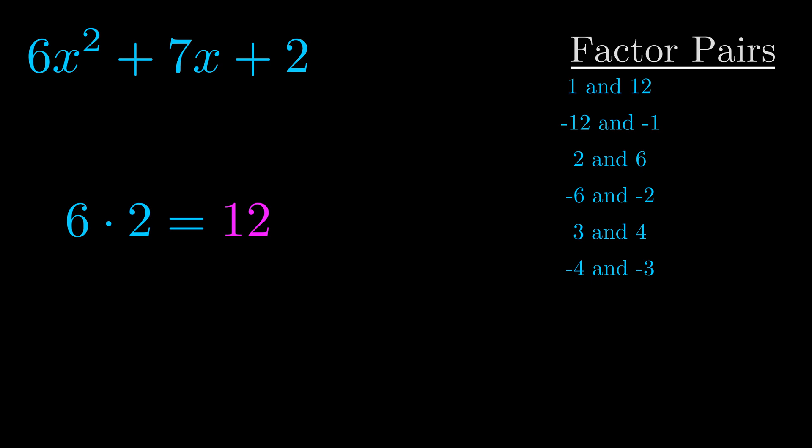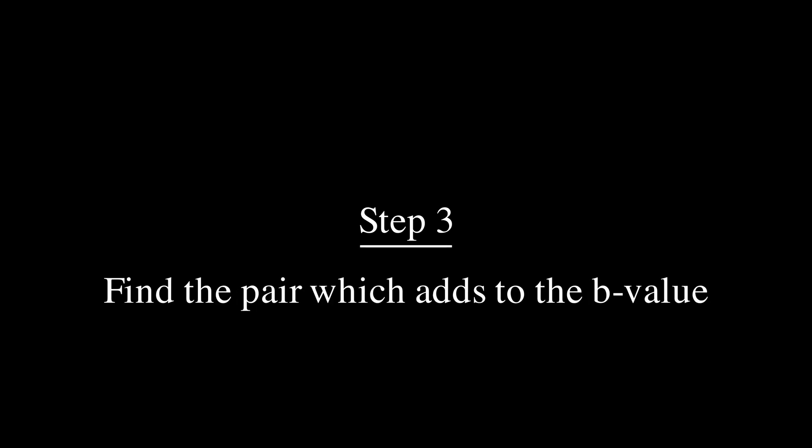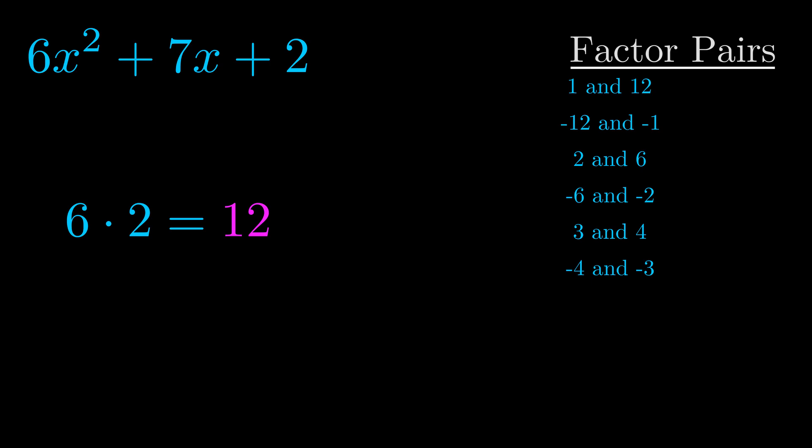Now once you have these factor pairs, the goal is to find which of these pairs adds to the b value. The b value is the coefficient on the x term. That's the middle term, the one that we haven't done anything with yet.